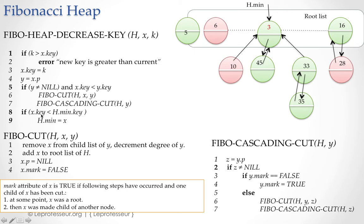Now we want to check if X.key is less than H.min.key. So 5 is less than 3? No it's not true. So we don't change the original H.min pointer to the minimum key root node. H.min always points to the minimum key node.